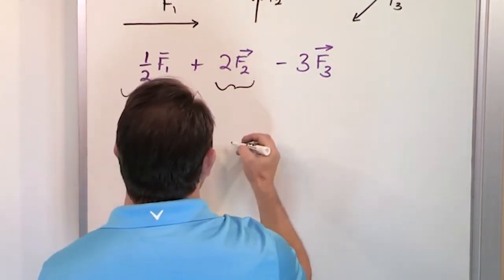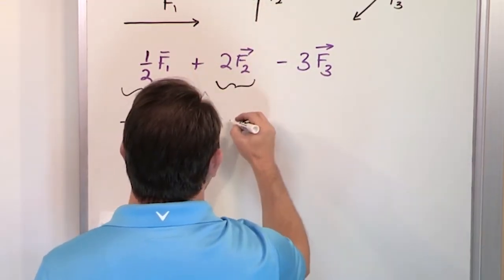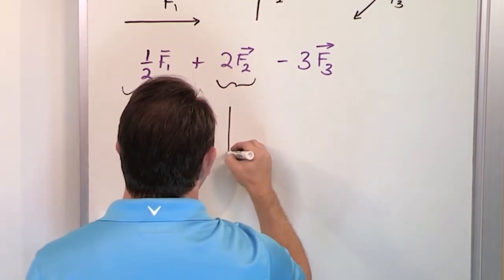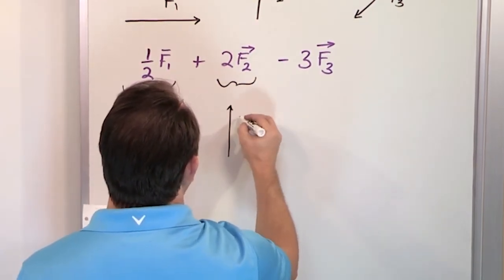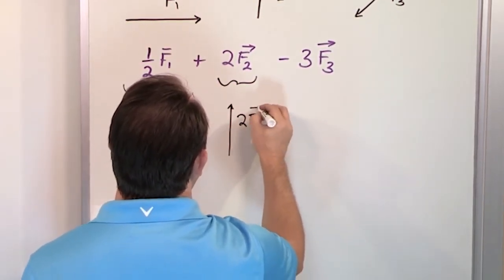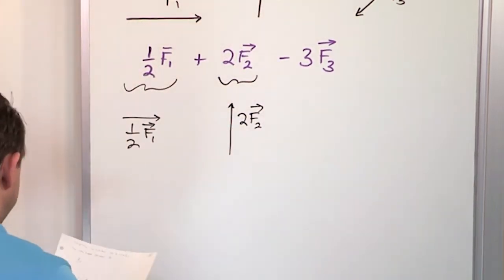And if that's vector F2 there, then twice vector F2 is going to be a vector that's more or less going to go, oh that's about twice, I'm just eyeballing it, 2 times F2. Same direction, but oriented up.